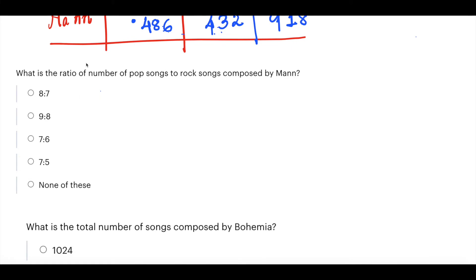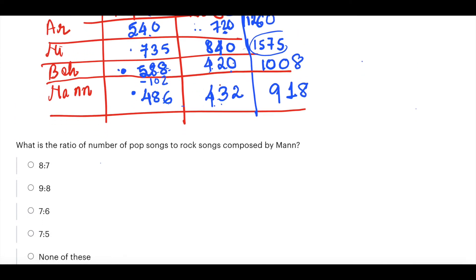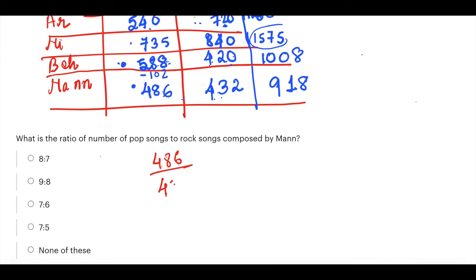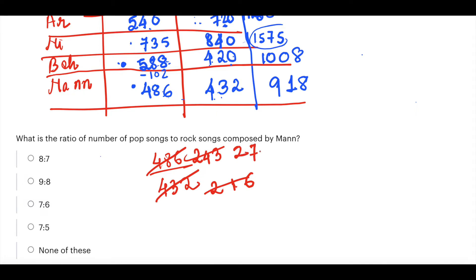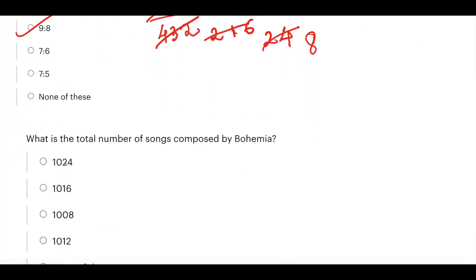Question 1: What is the ratio of pop songs to rock songs composed by Man? That is 486:432. Cancelling by 2 gives 243:216, then by 9 gives 27:24, then by 3 gives 9:8. So option B is the answer.